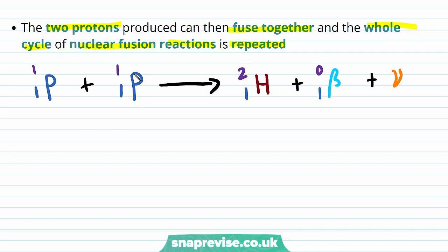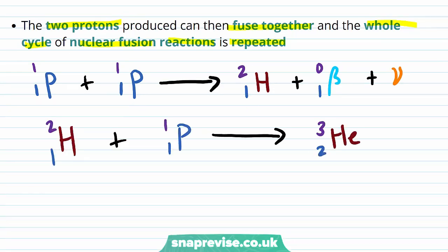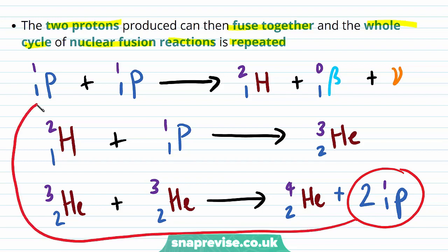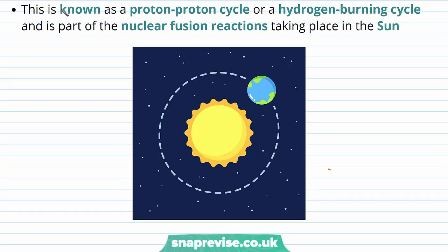The two protons produced can then fuse together and the whole cycle repeats. Two protons fuse to form deuterium, deuterium fuses with a proton to form helium-3, and two helium-3 nuclei fuse to form helium-4 and two protons. This is known as the proton-proton cycle or hydrogen burning cycle, and is part of the nuclear fusion reactions taking place in the sun.